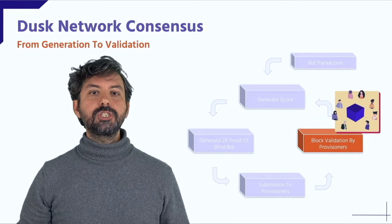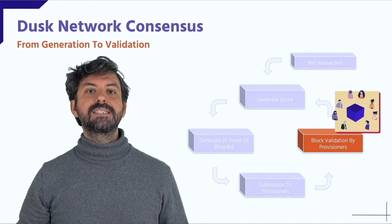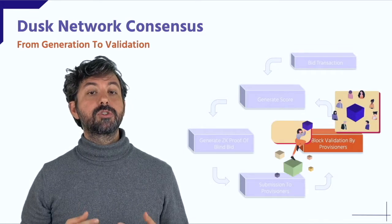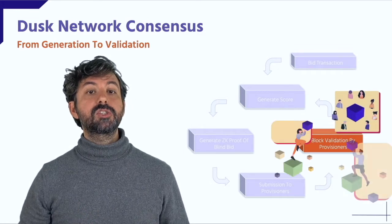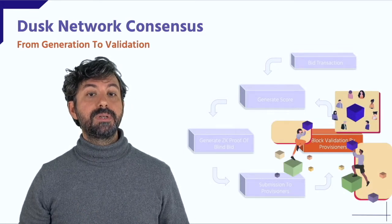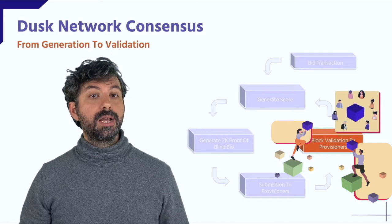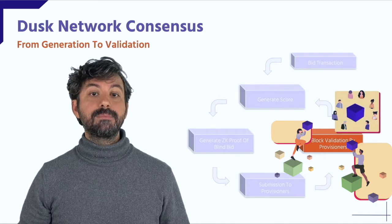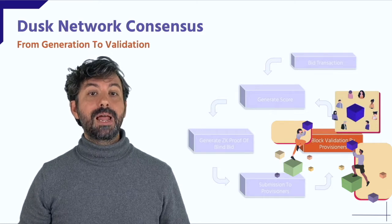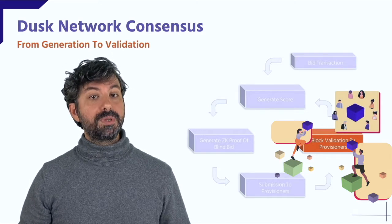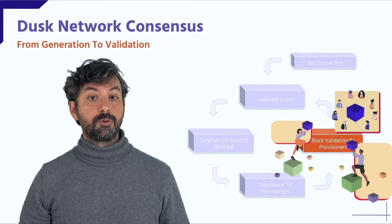The generation phase ends with the block generators propagating their score from the blind bid lottery, together with a new block, a one-time stealth identity, and the proof of blind bid to the committee of validators for that round.